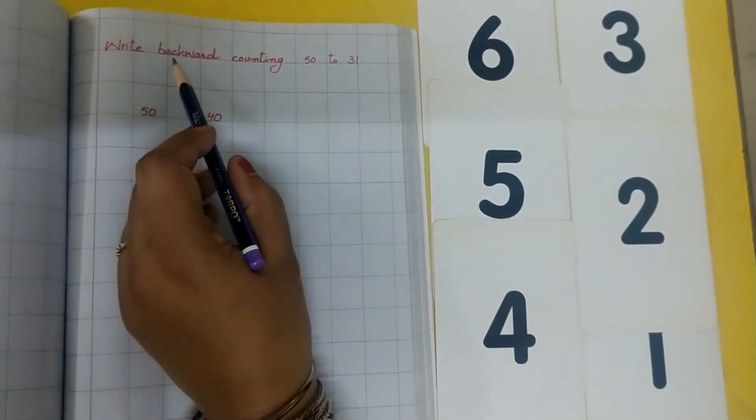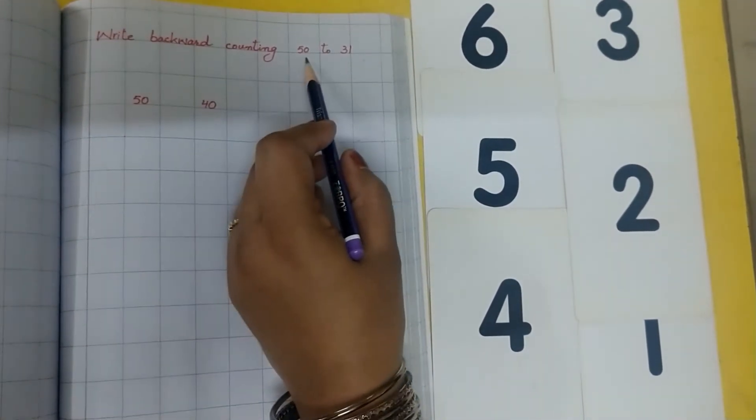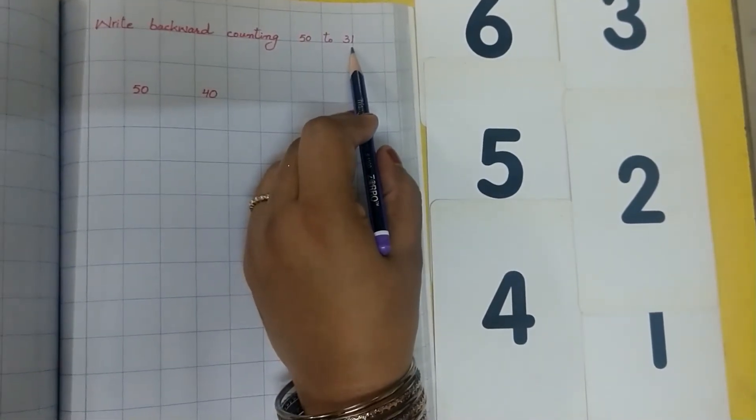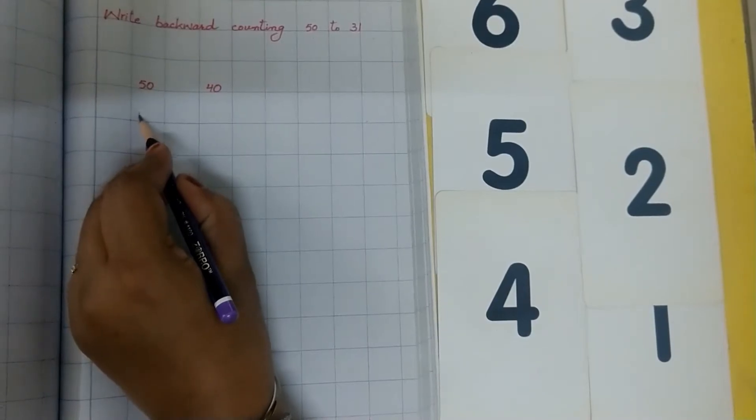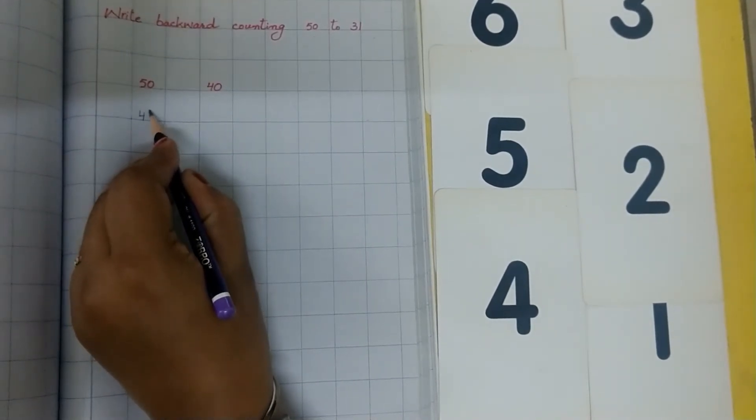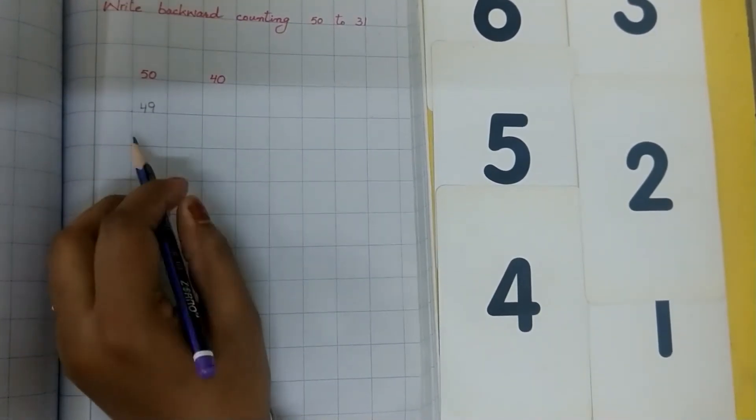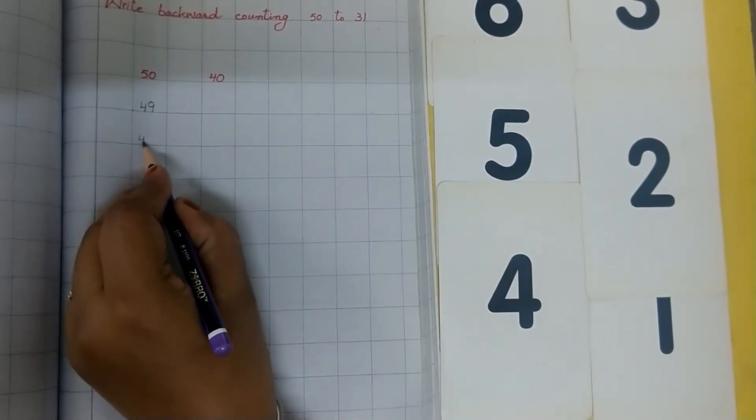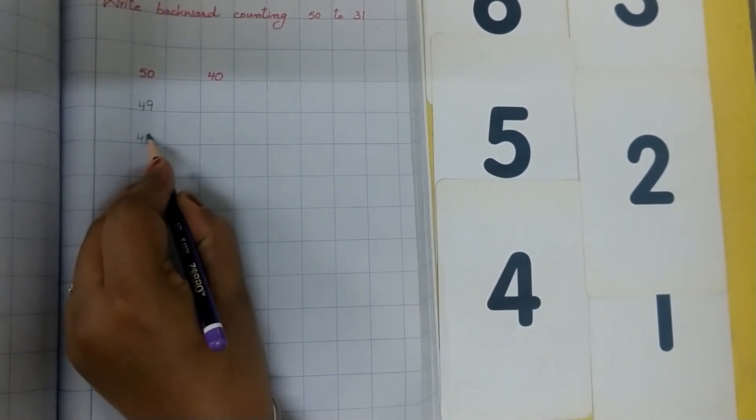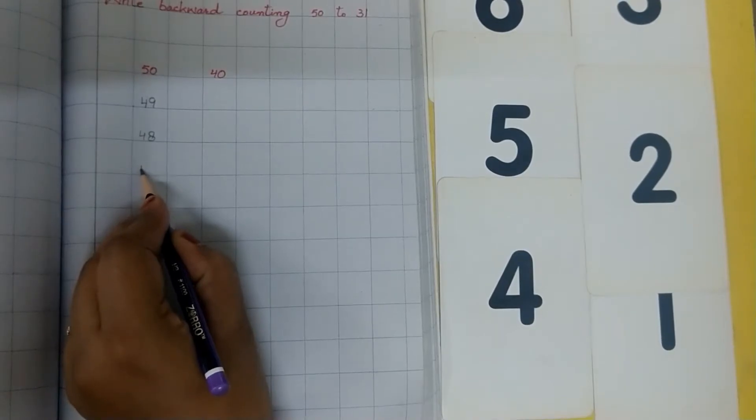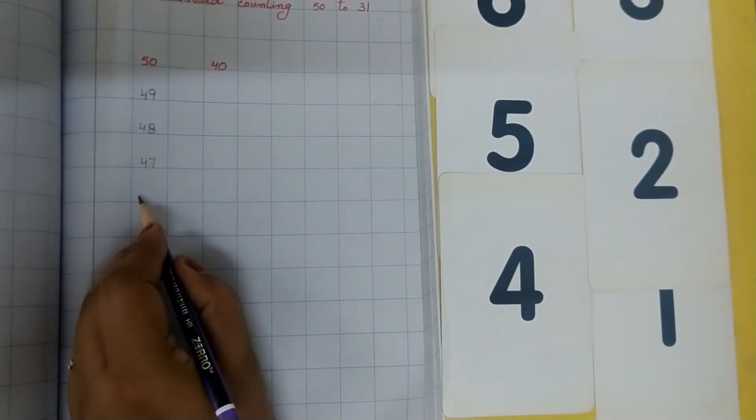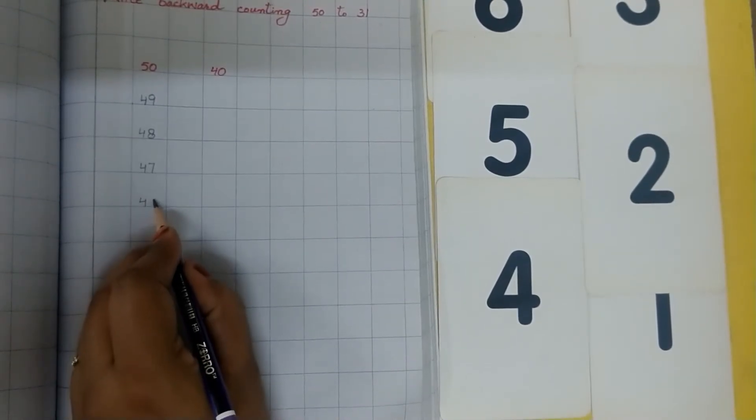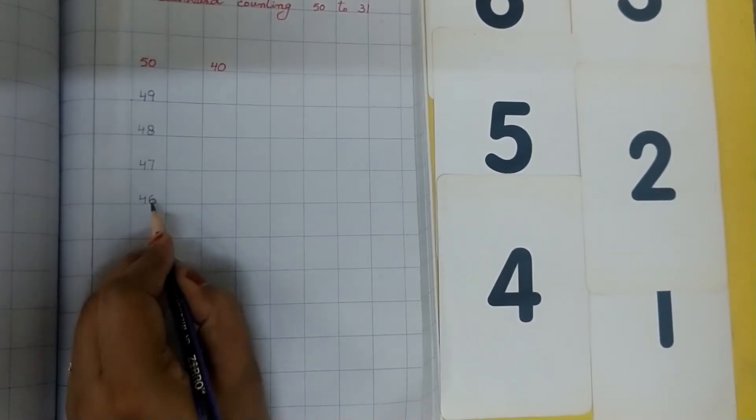Right backward counting 50 to 31. 50, 49, 48, 47, 46.